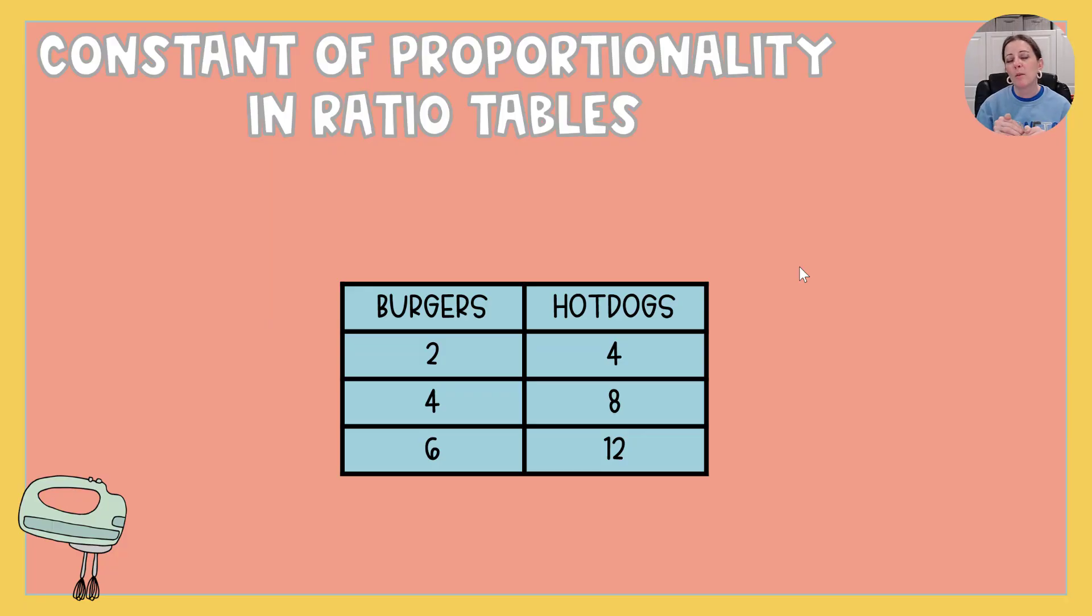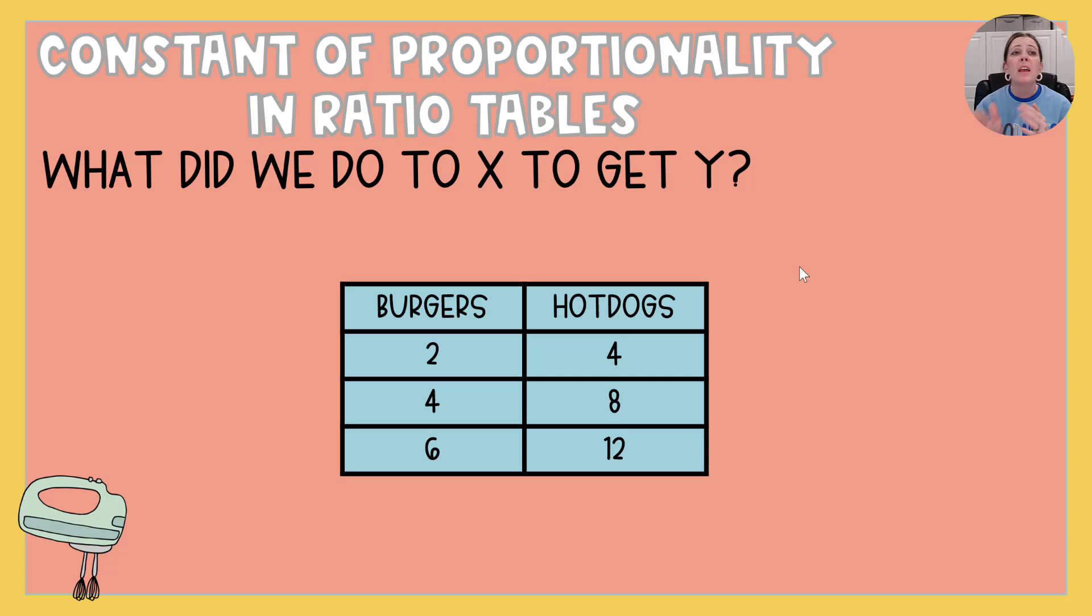Okay we're going to start by looking at constant of proportionality in ratio tables. In order to find that constant thing that happens over and over we need to say what did they do to x to get y. So which one of these was the x axis? You got it. You remembered from our last video. X axis is the burgers and y axis is the hot dogs. So what are we doing to the numbers in the burger columns to get those numbers in the hot dog columns? This one's real easy to see because we know two times two is four. We know that four times two is eight. And we know that six times two is twelve.